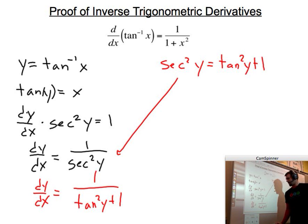Now, you might say, well, I was trying to get it out in terms of y, and this is still in terms of y. That doesn't do me any good. And you're right if I leave it there, but what we can look at is that we have a tangent squared of y, and we have a tangent of y up here.